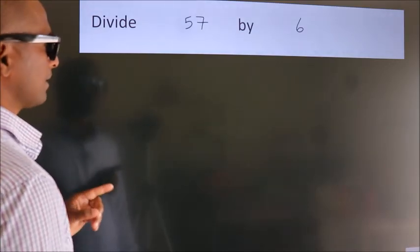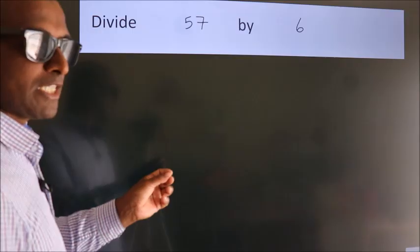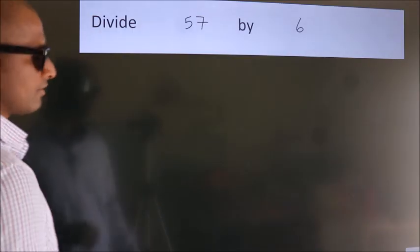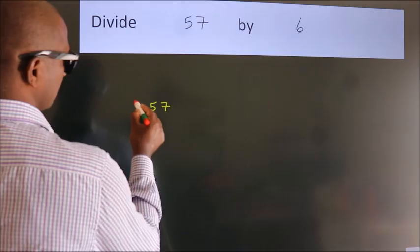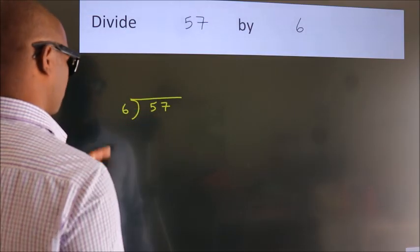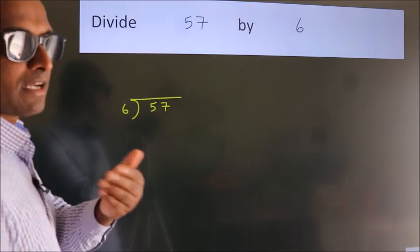Divide 57 by 6. To do this division, we should frame it in this way. 57 here, 6 here. This is your step 1. Next.